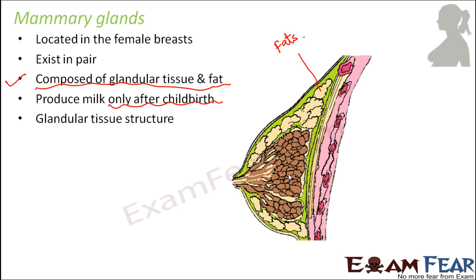The glandular tissue structure consists of the mammary lobes. This entire structure is divided into lobes — for example, this entire part is one lobe, and from here you have another lobe. So these various sections are each called a mammary lobe.